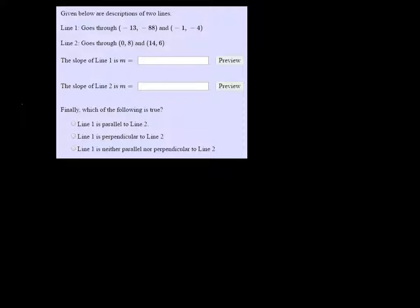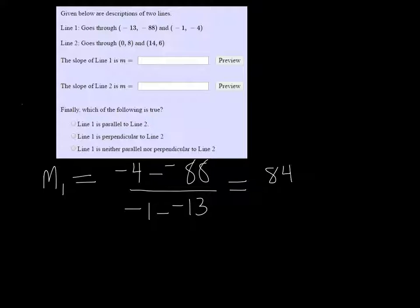So the slope of the first one, I'll call M1, is going to be negative 4 minus negative 88 all over negative 1 minus negative 13. So that's going to be negative 4 plus 88, which is 84, and negative 1 plus 13, which is 12. And 84 divided by 12 is 7.